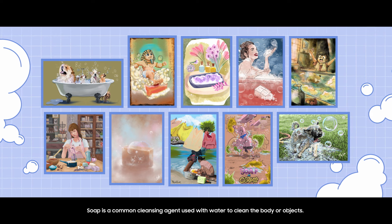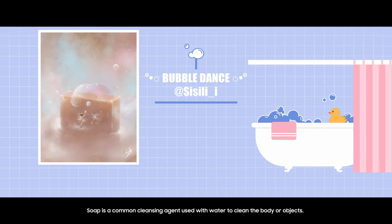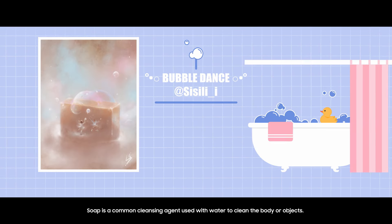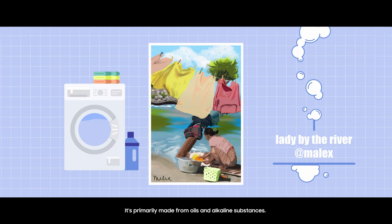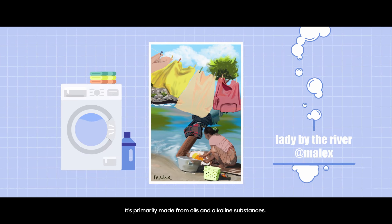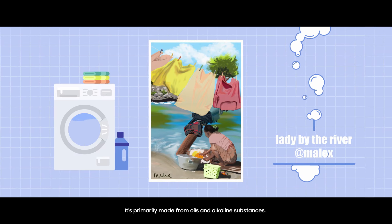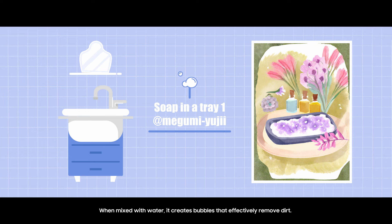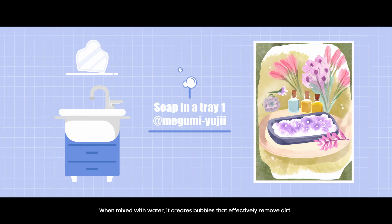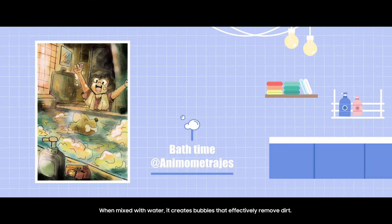Soap is a common cleansing agent used with water to clean the body or objects. It's primarily made from oils and alkaline substances. When mixed with water, it creates bubbles that effectively remove dirt.